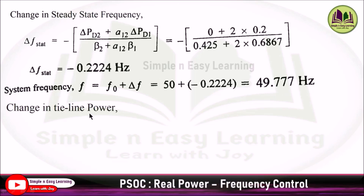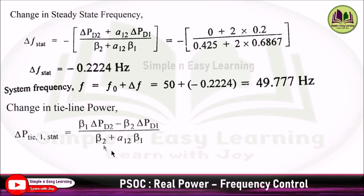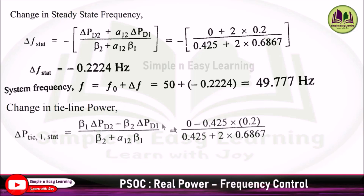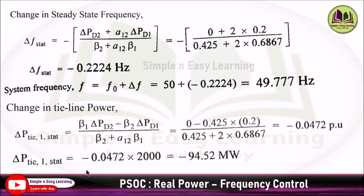For the change in tie line power, substituting into the formula with ΔPD2 = 0, the first term becomes zero. ΔP_tie = −β2·ΔPD1 / (β2 + a12·β1) = −0.0472 pu. In terms of MW, multiplying by the area 1 base of 2000 MW gives ΔP_tie = −94.52 MW.